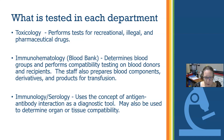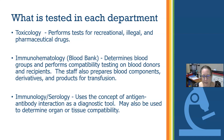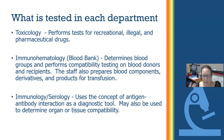Immunology and serology uses the concepts of antigen-antibody interactions as a diagnostic tool — you can look for the antigens or look for the antibodies depending on the test. It can also be used to determine organ or tissue compatibility. There are many tests that fall under immunology and serology, from pregnancy tests and COVID antigen tests to strep screens, RSV screens, flu swabs, and checking for antibodies to hepatitis B and HIV.